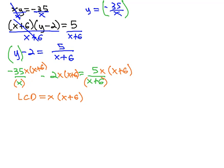And when we reduce, we should get an equation we can solve. The x's divide out, giving us negative 35 times x plus 6 minus 2x times x plus 6. And with the x plus 6 dividing out, it equals 5x.